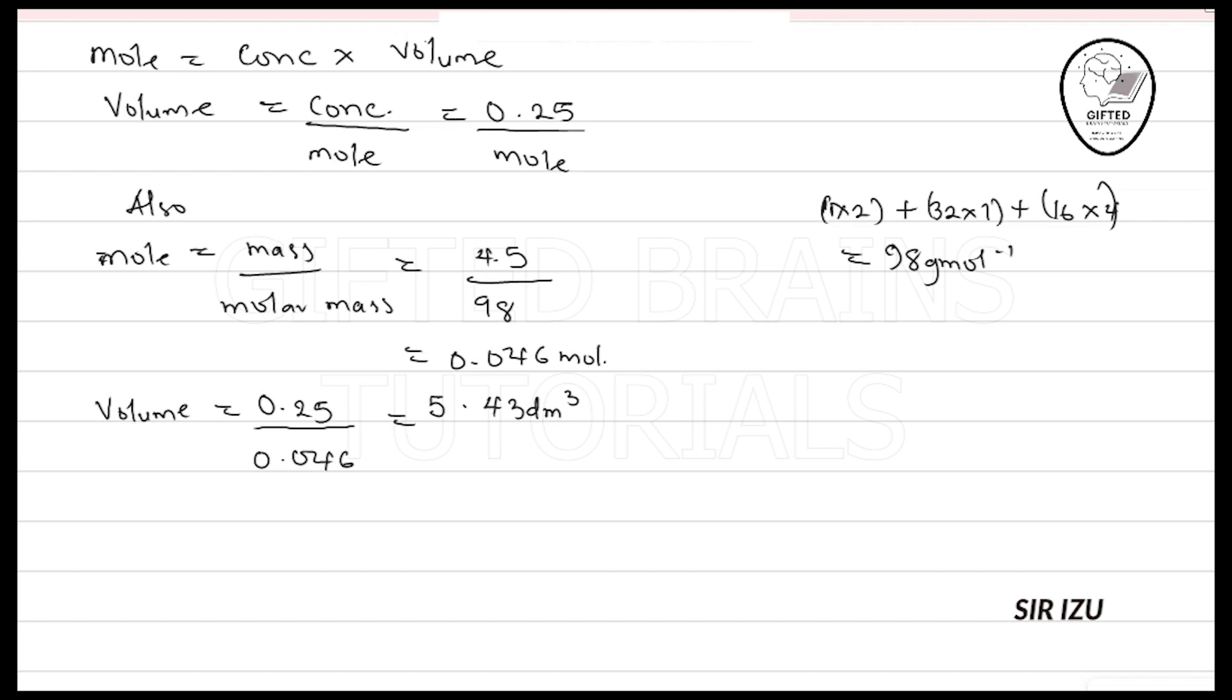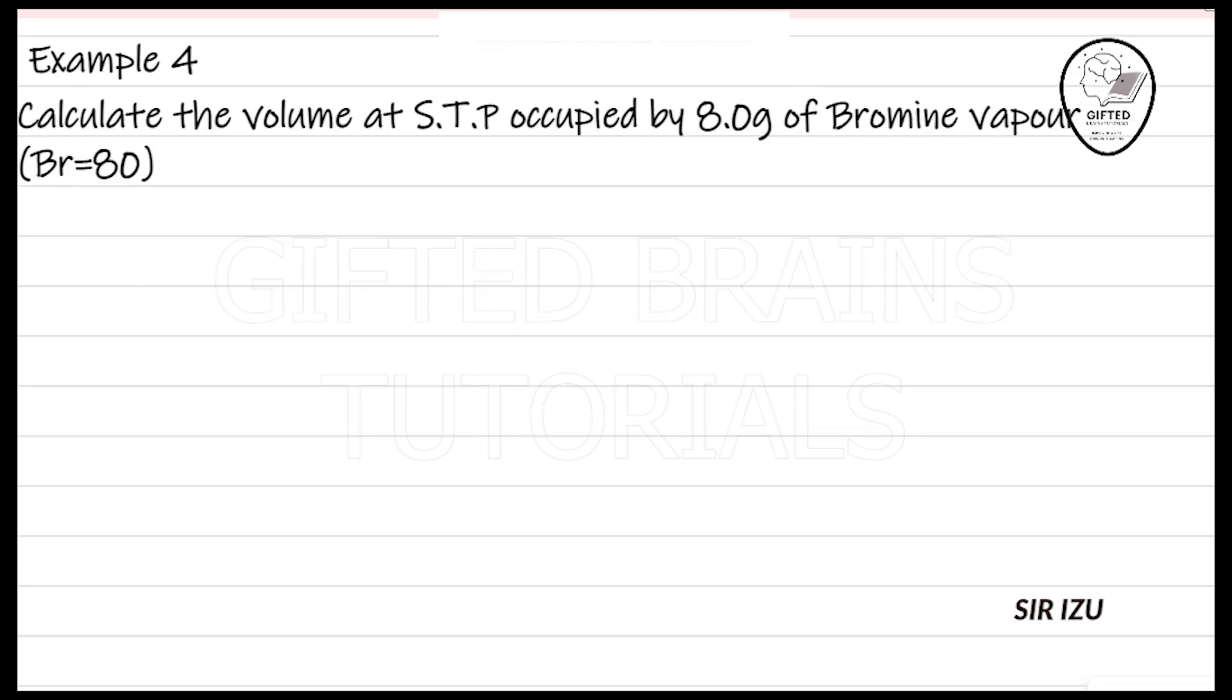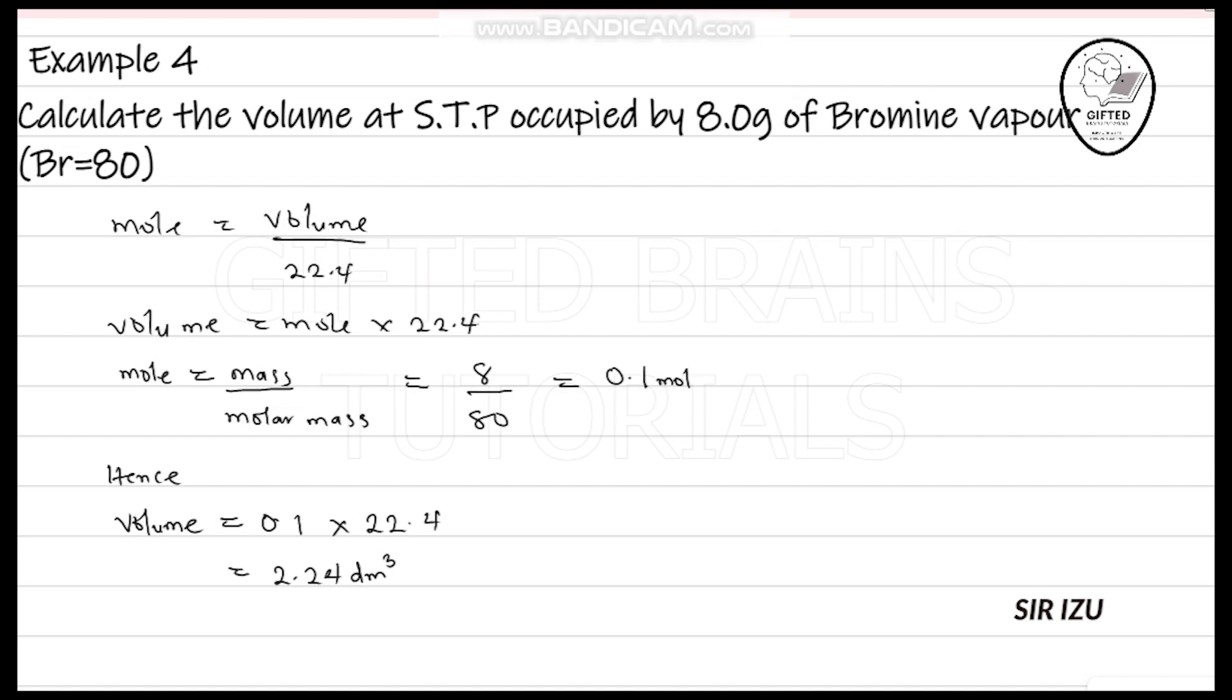Example 4: Calculate the volume at STP. If I'm going to get the volume at STP, I just have to have my relationship. At STP, mole equals volume over 22.4. So my volume equals mole multiplied by 22.4. To get my mole, the further information is given there: 8.0 grams of bromine vapor. I can get my mole. To get my mole, it's mass over molar mass. The mass is 8 over 80, so 0.1. And using the 0.1, I can get 0.1 times 22.4, and that gave me 2.4 dm³. Thank you.